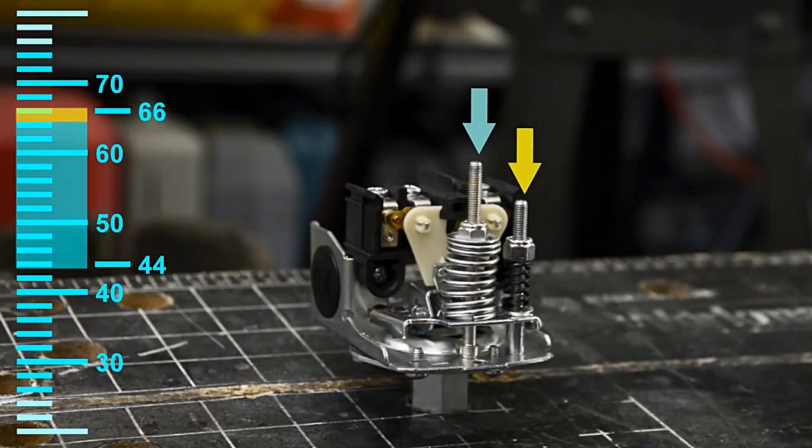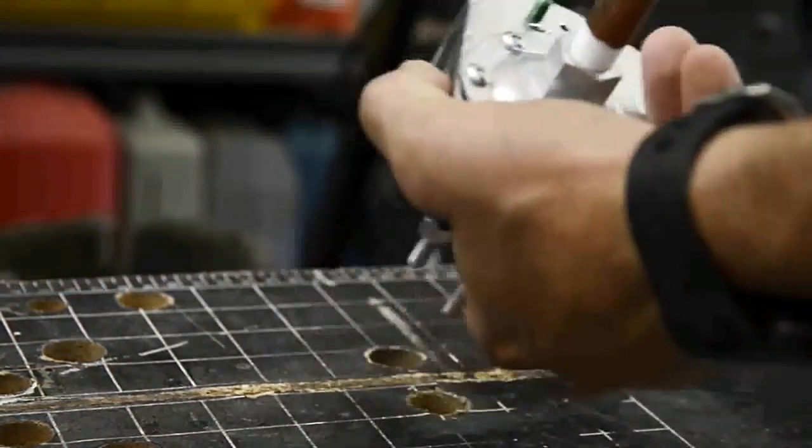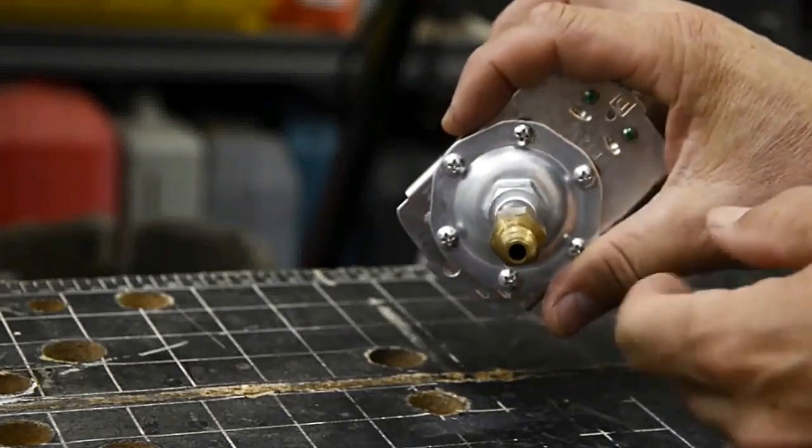Also on the bottom of the pressure switch, we'll disconnect it. Inside is a small orifice.